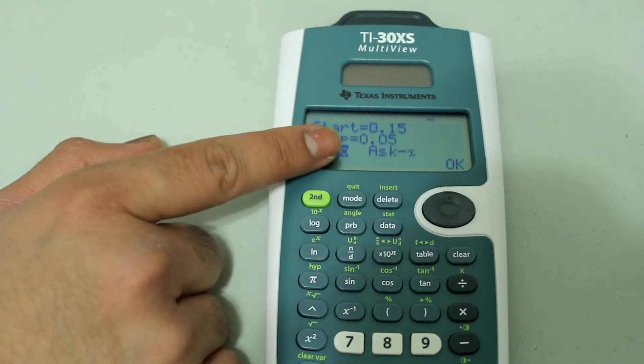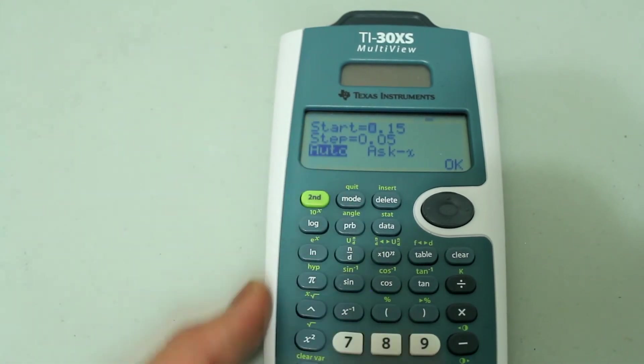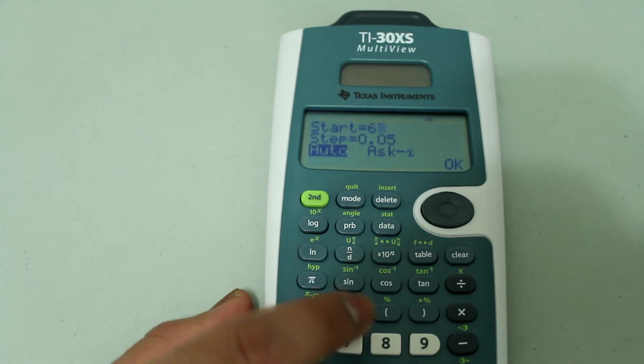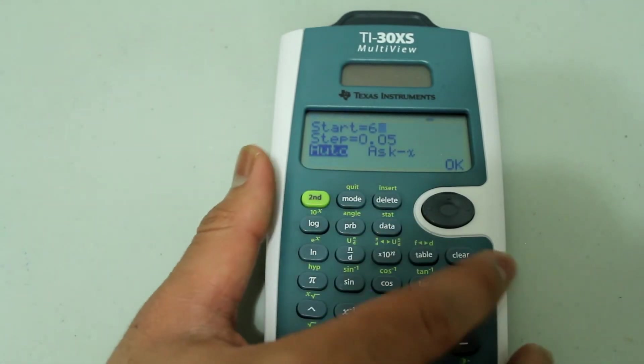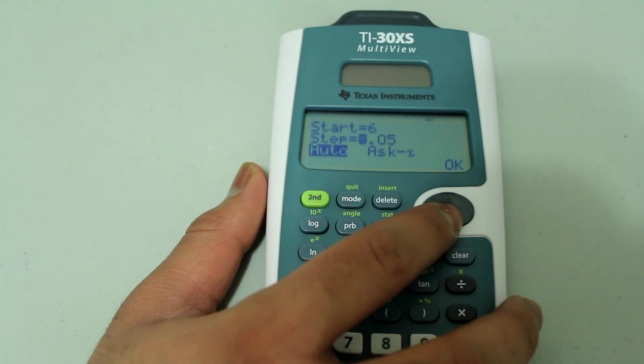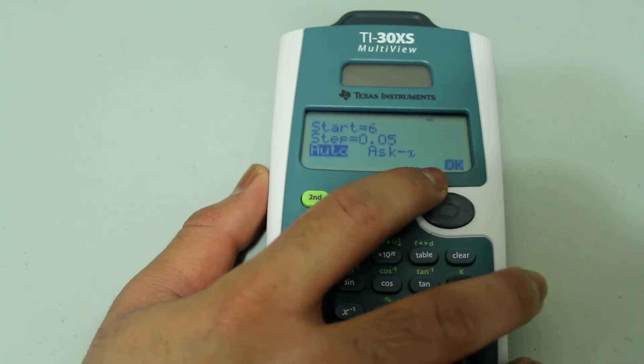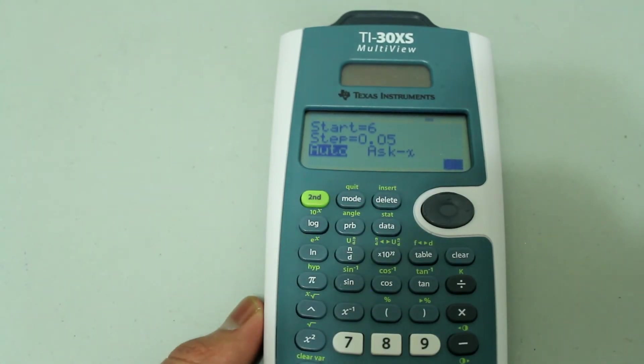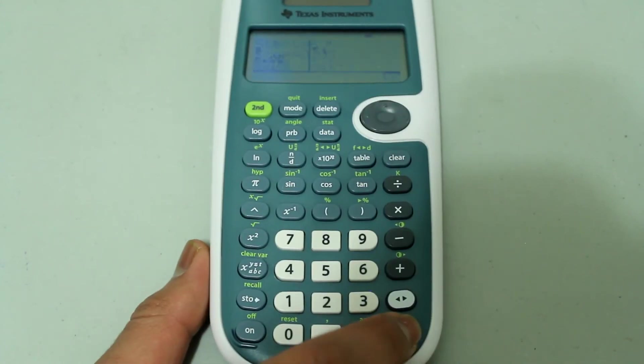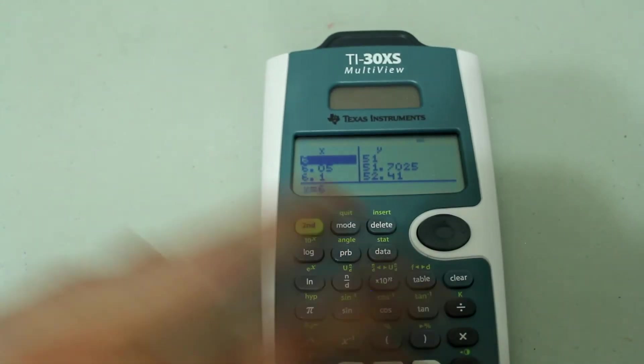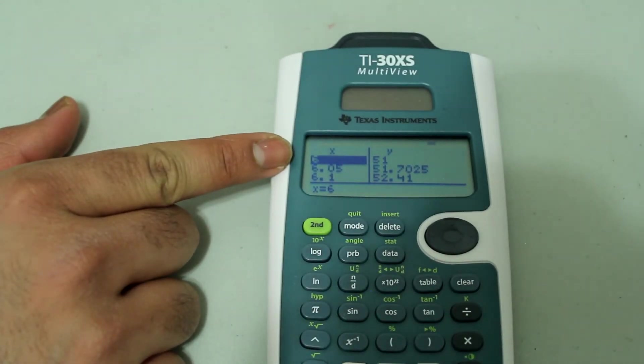I'm going to make the table start at 6 and leave the step at 0.05. Notice, when I go back to the table, arrow down until the cursor is blinking on OK. Press enter. Notice now the table starts at x equals 6.